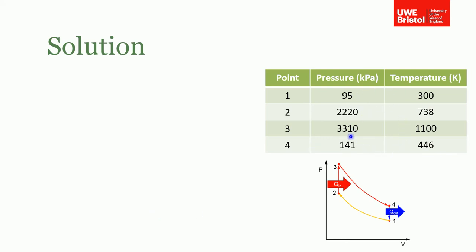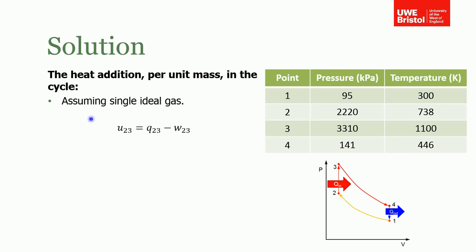Now what we're also asked to find was the heat addition per unit mass. We don't need to know anything about how much air is actually in the cylinder. Assuming an ideal gas, we know the change in internal energy is equal to the net heat supplied between two and three minus work. But because it's isochoric between two and three, no work is done.